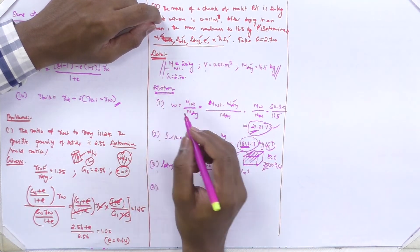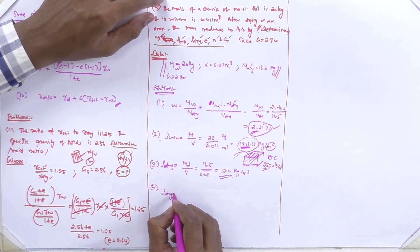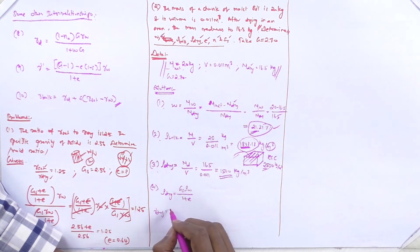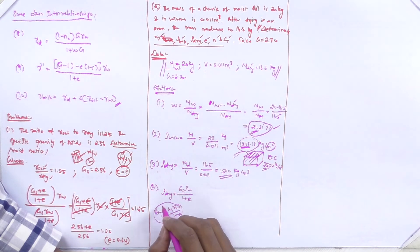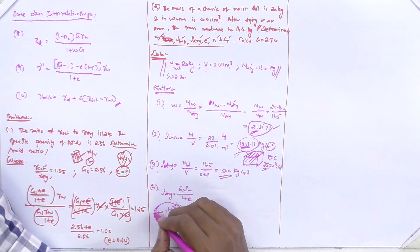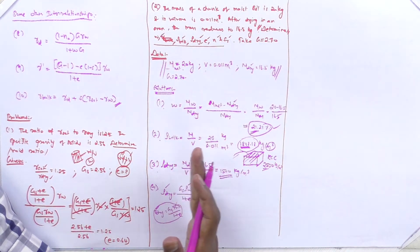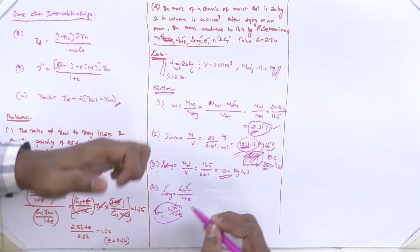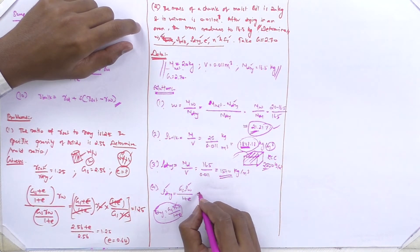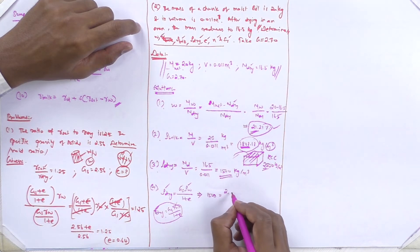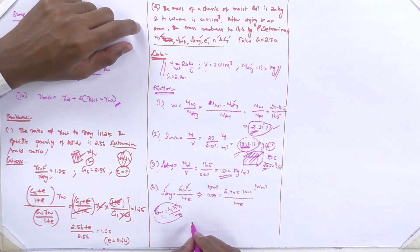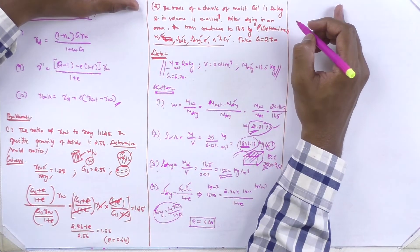Using rho_dry = Gs·rho_w / (1+e): 1500 = 2.7 × 1000 / (1+e), giving void ratio e = 0.8. Note that wherever gamma appears in the formula, it can be replaced with rho — the meaning is the same.